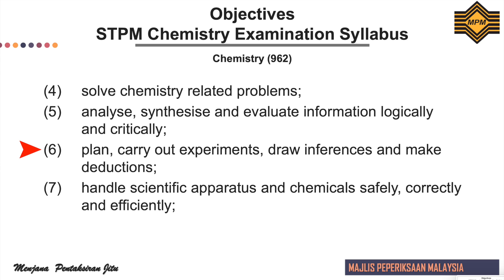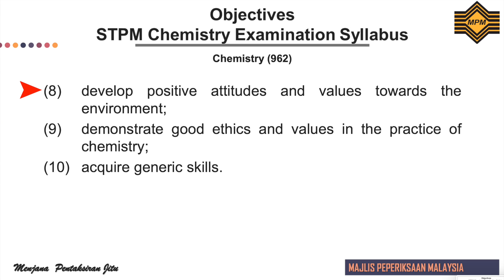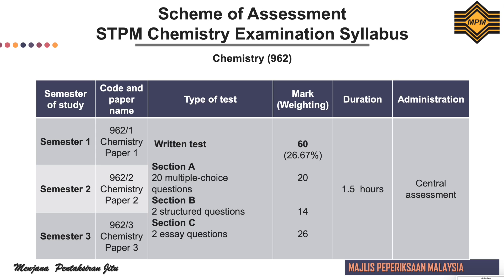Sixth, plan, carry out experiments, draw inferences and make deductions. Seventh, handle scientific apparatus and chemical safety correctly and efficiently. Eighth, develop positive attitudes and values towards the environment. Ninth, demonstrate good ethics and values in the practice of chemistry. And tenth, acquire generic skills.